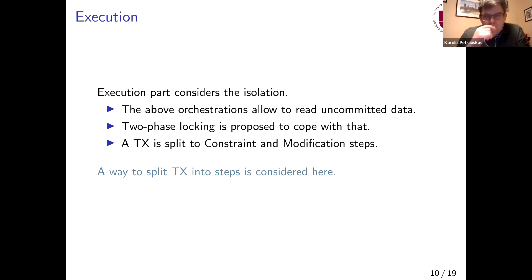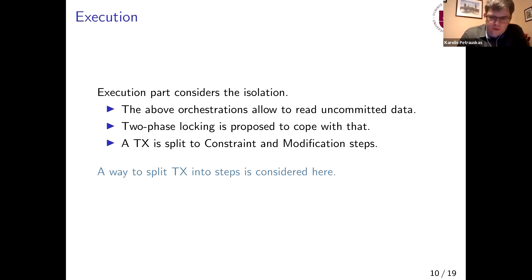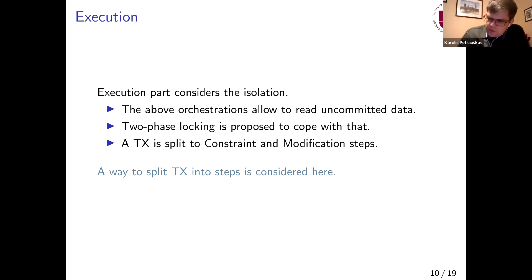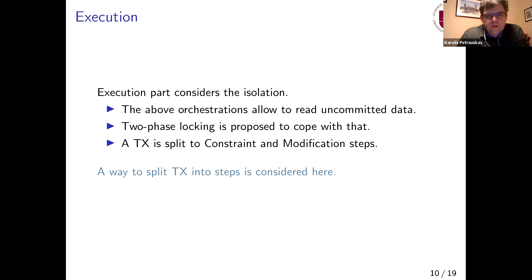The orchestration was responsible for making the transaction atomic — either all nodes execute it or all nodes reject it. The execution part considers the isolation properties, because each shard executes consensus locally inside the shard. If we have a multi-shard transaction, it can happen that another transaction will read partially committed data from one or another shard. So the execution part considers this and basically applies two-phase locking in this scheme.